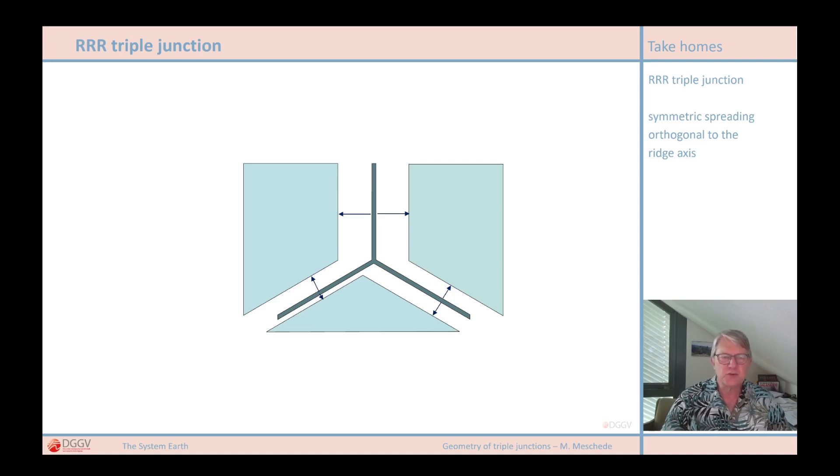In short, it doesn't work that way geometrically because the arrows indicating the velocity in this very regular system should actually be all of the same length and arranged symmetrically to each other.